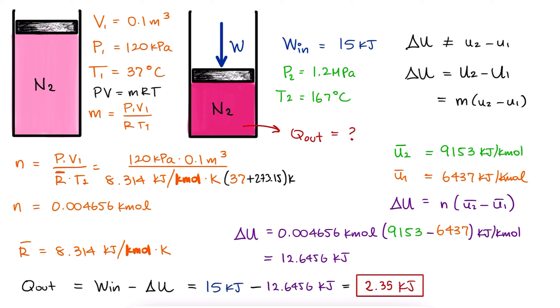Alternatively, we can use one of the other methods we discussed. The polynomial fit for CV, which in this case would be longer because what we actually have is the polynomial fit for CP, and then we'd have to find CV, or the average value for it between the two temperatures.